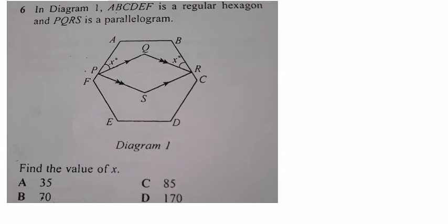First we need to find the angle of the regular hexagon. The formula to calculate this is (n - 2) × 180 divided by n, where n is the number of angles.